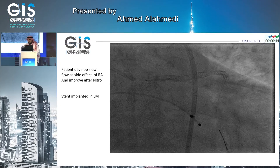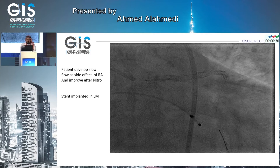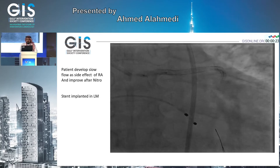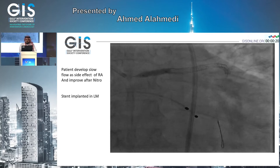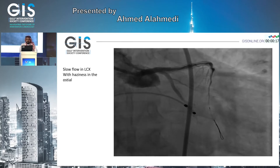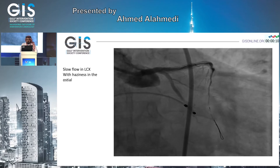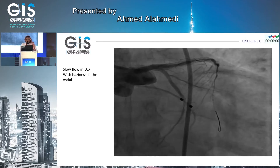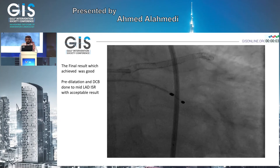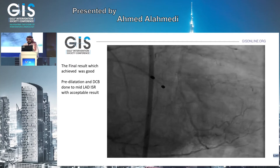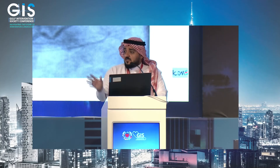The patient became hypotensive. Our strategy was: since we had good expansion of the lesion, we placed the stent directly and put the patient on inotropes. As we know, slow flow is a side effect of rotablation. She was already on inotropes, so we decided to do a kissing balloon for the lesion and achieved a good result — the blood pressure improved.